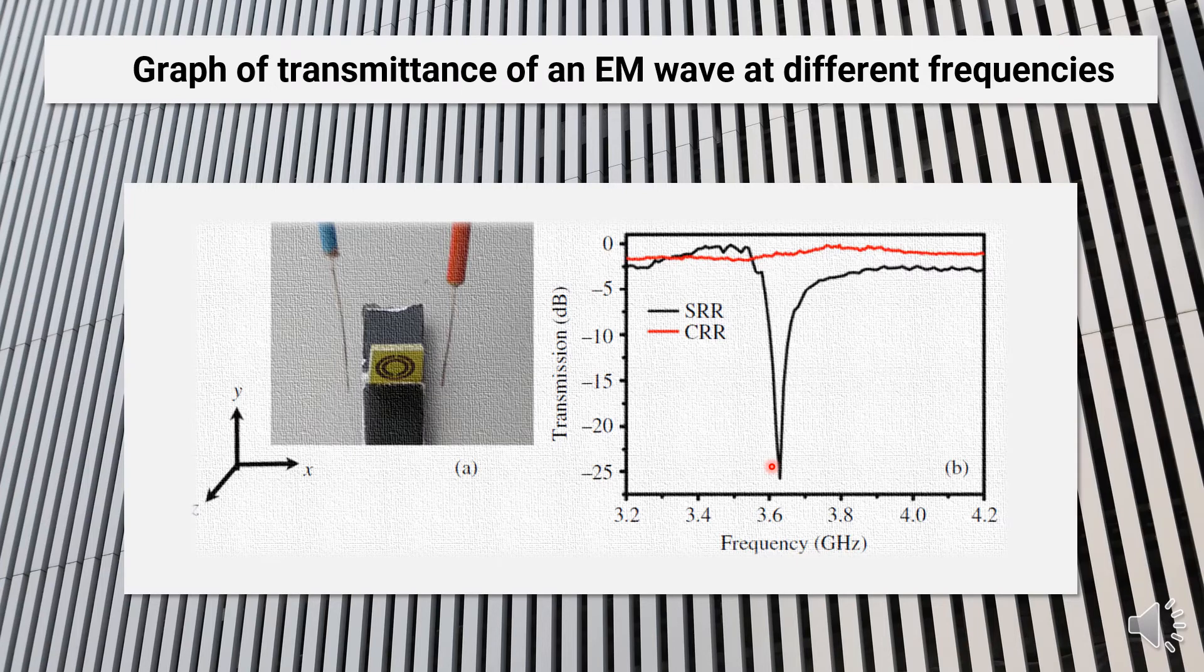This shows resonance in the equivalent LC circuit and hence a huge opposing field and an effective negative field. The red line here shows the graph for the CRR or closed ring resonator, which has resonant frequencies far away from this frequency range.